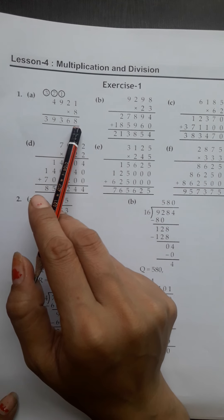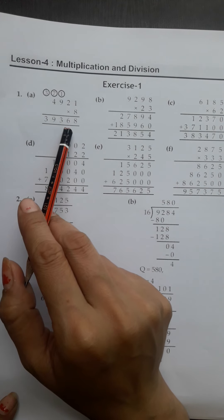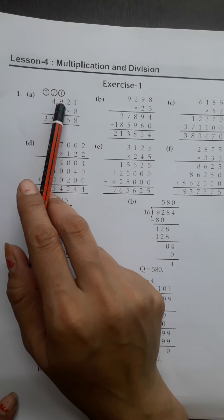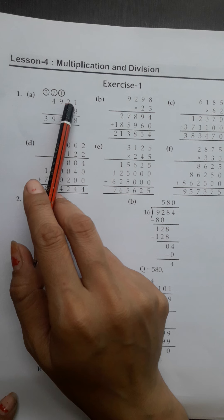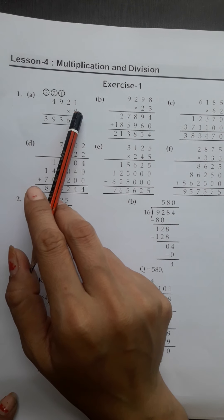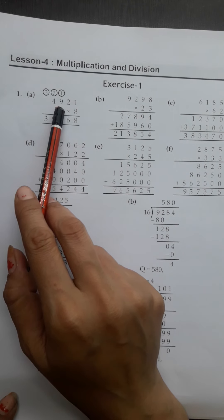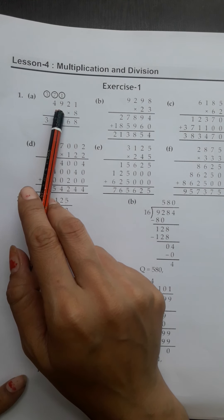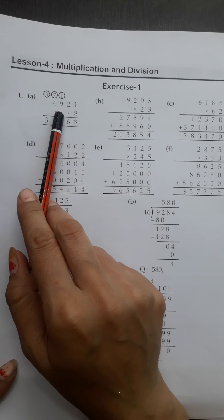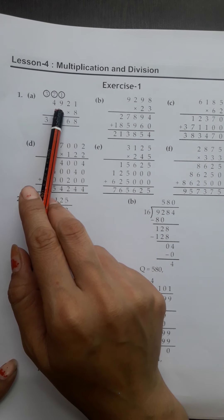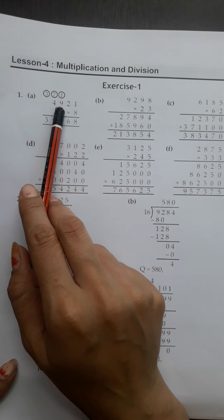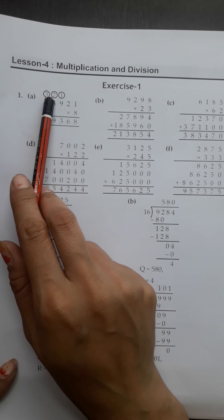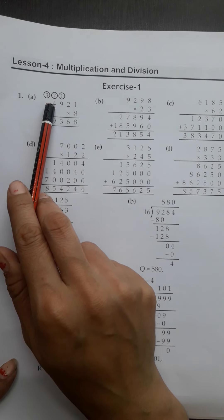8 ones are 8. 8 twos are 16. 6 in 1's place, we will carry 1 to 100's place. If we multiply with 10's, then we will carry to 100's place. Then 8 nines are 72. In 72, we will add 1 plus. 73.